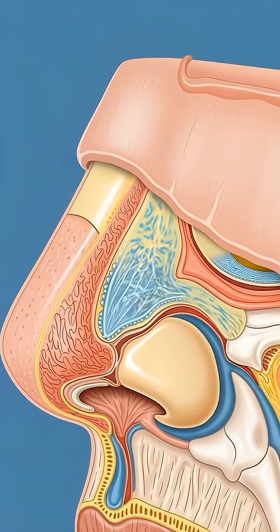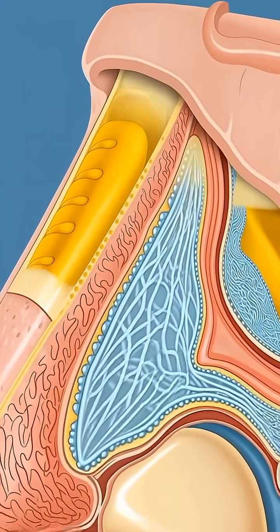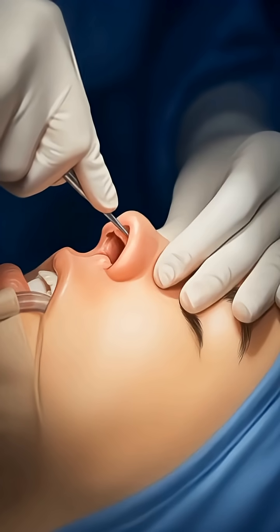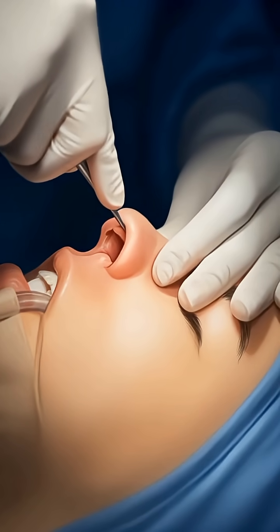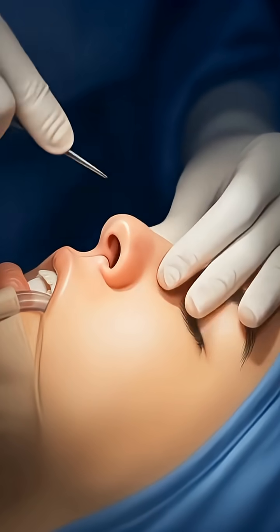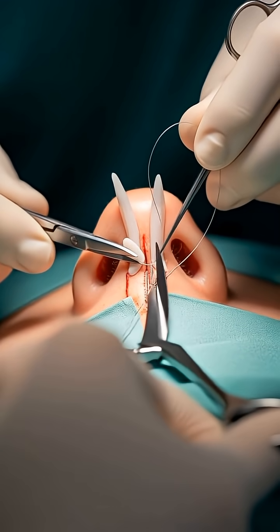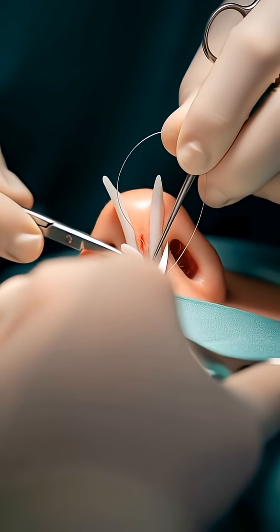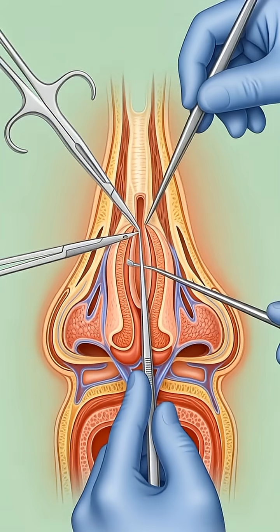Lifting the skin allows the surgeon to directly access and reshape the underlying structures. Nasal bones may be reshaped or reduced to improve the overall contour of the nose. The cartilage at the tip of the nose is reshaped to achieve better definition and balance.